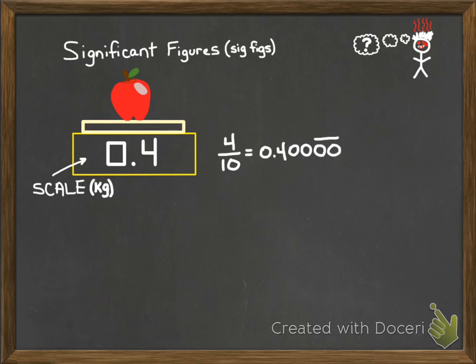In mathematics and in your math classes, four tenths is the equivalent of 0.40000 continuing. In science, we have rules about those zeros. We don't know what those zeros are, and so therefore we can't say them. In math class that's appropriate, but in your science classes it's not.